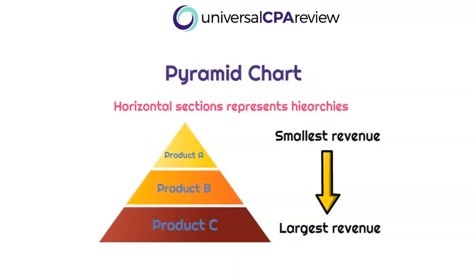Next up is a pyramid chart, called that because it's in the shape of a pyramid. It allows us to see hierarchy between products or whatever else you want to compare. It has horizontal sections representing different layers, and we go from smallest to largest. In this case, comparing product revenue, product A is on top with the smallest revenue, while product C at the base has the largest. It's very easy to see the hierarchy from top to bottom.